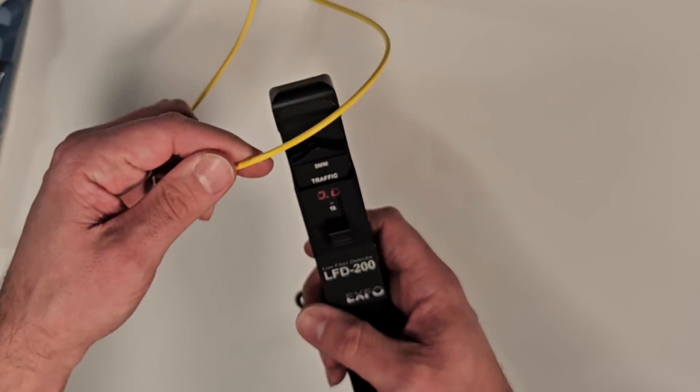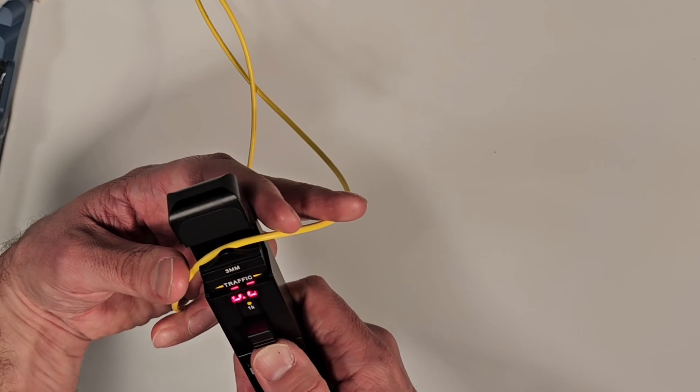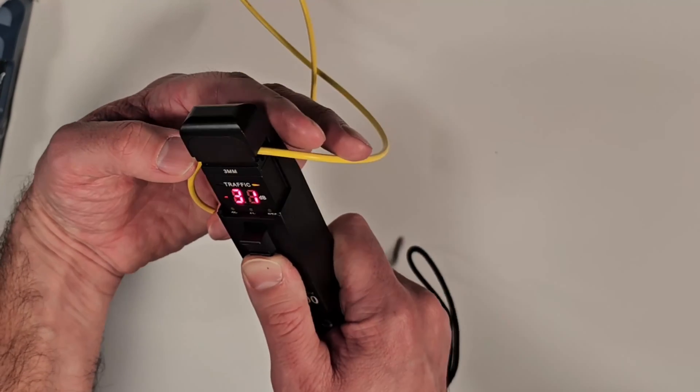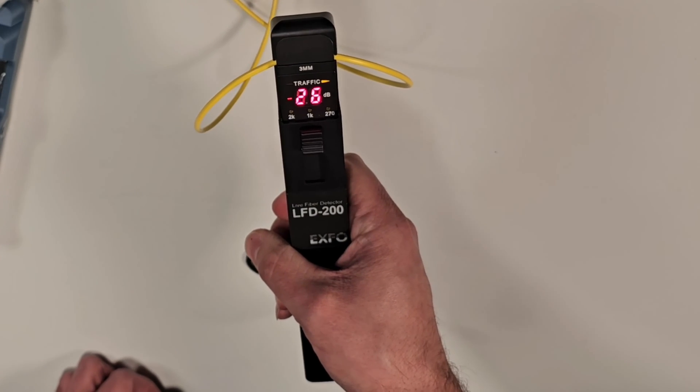Slide the switch upward, or for hands-free operation, slide the switch upward and over to the right to lock it in place. The fiber identifier tells you if you have traffic with a beep sound, the transmission direction, and the power level on the LED display.